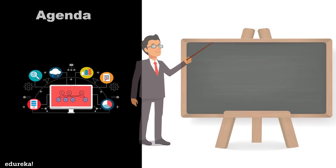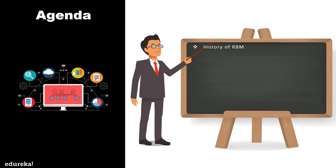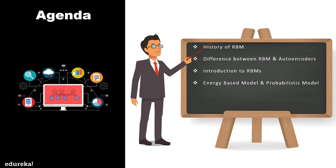Let's have a look at today's agenda. First we will begin with a short history about Restricted Boltzmann Machines. Then we will look at the difference between autoencoders and RBMs. Next we will see what Restricted Boltzmann Machines are and how they work. We will also cover the energy-based model and probabilistic model of RBM, the training of RBMs, and finally an example of Restricted Boltzmann Machines using collaborative filtering.